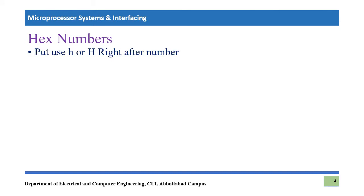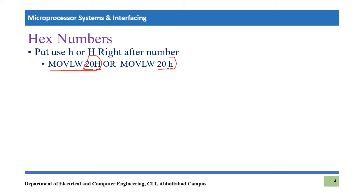The first data representation in PIC assembly language is hexadecimal. To represent a hexadecimal number you put H or h — capital or small — right after the number. For example, you can write 'movlw 20H' where this H indicates that the number 20 is in hexadecimal format. Alternatively you can write '20h' with a small h, which again indicates this is a hexadecimal number.